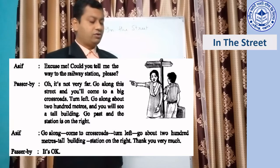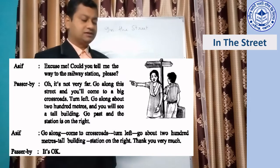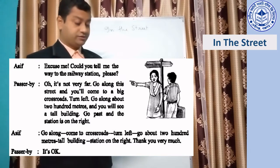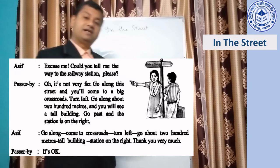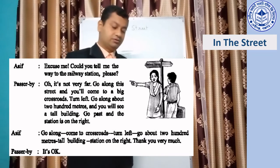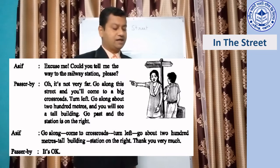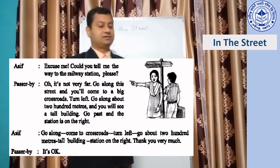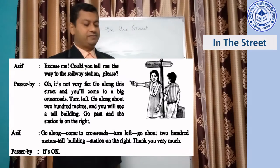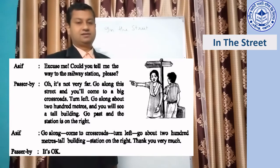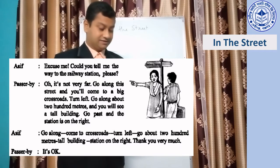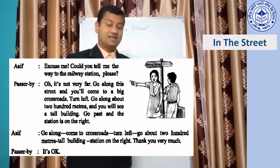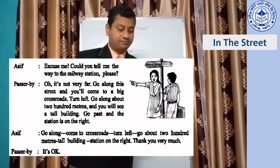So, go along, come to a crossroad, turn left, go about 200 meters, tall building, station on the right. Asif says: 'Thank you very much.' The passerby replies: 'It's okay.'